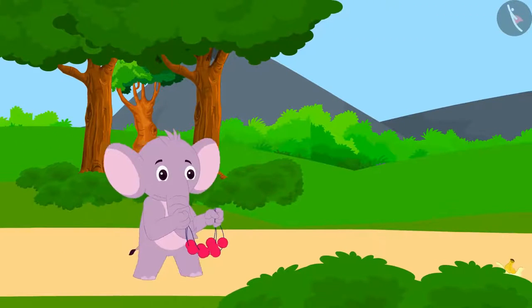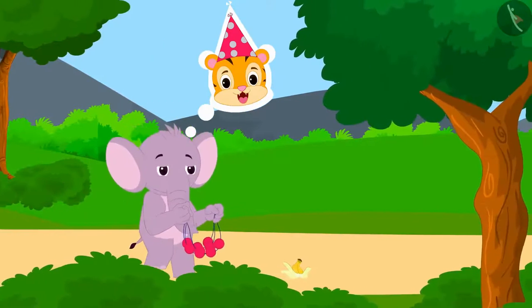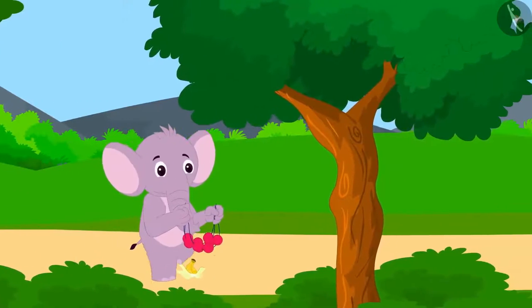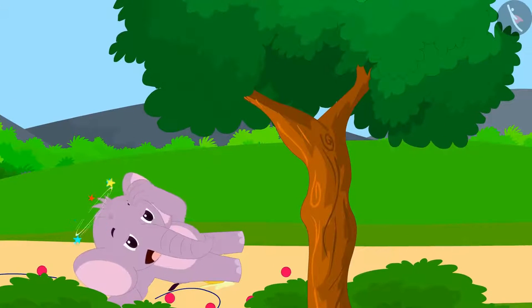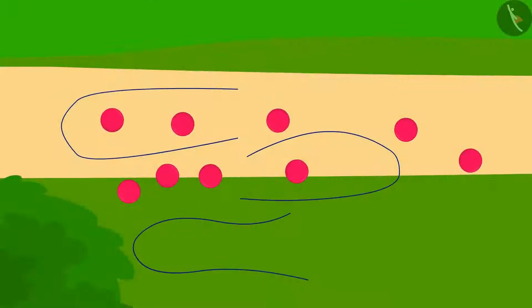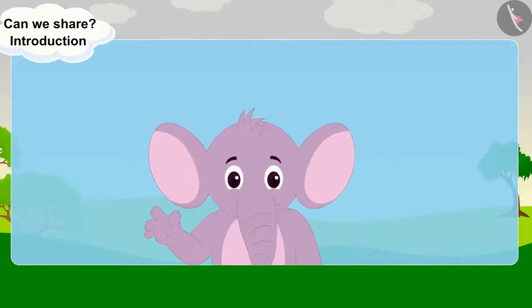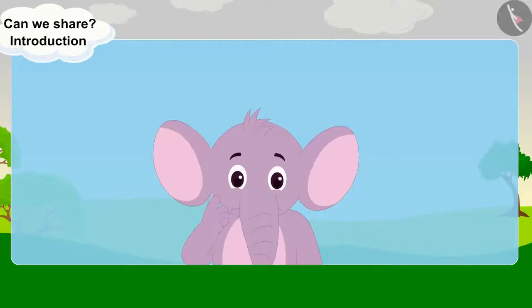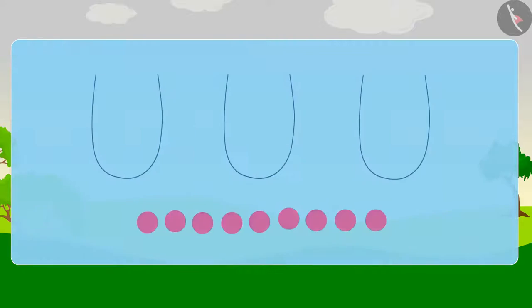Appu the elephant is bringing three necklaces for Shere Khan as a birthday gift. Oh no! Appu slips and all the necklaces are broken. Appu had a total of 9 pearls in his 3 necklaces. Can you help Appu make 3 necklaces with equal pearls again? Let's do it together.